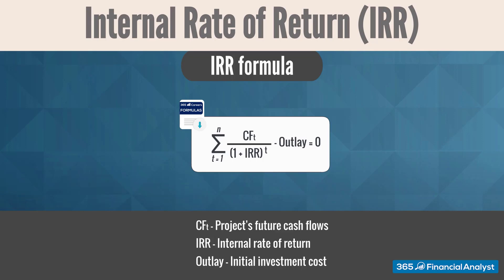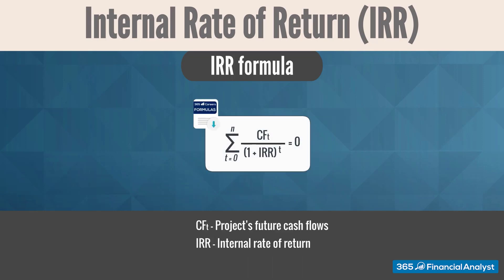The difference is that instead of using the required rate of return, we now have the internal rate of return as the discount factor. Another point to note is that this time we do not know it in advance. Many investments have cash flow patterns in which outlays occur both at time zero and at future dates. Thus, in such cases, we could define IRR as the discount rate that makes the sum of the present values of all cash flows equal to zero, using the following version of the formula.